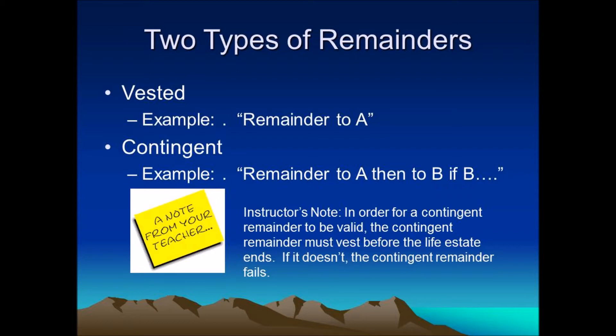With a vested remainder, it exists when we know who owns it and there is no condition he must first meet. For example, to B, then to A — our remainder is going to be A. A contingent remainder, on the other hand, exists when we do not know who will receive it, or there is a condition that person must meet before he can become the owner.